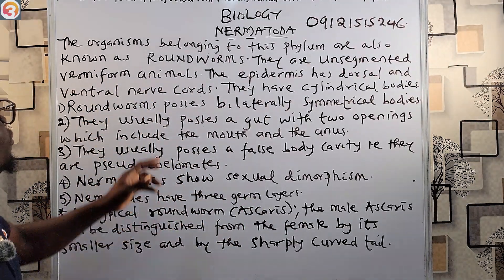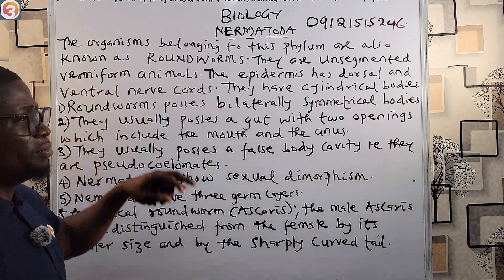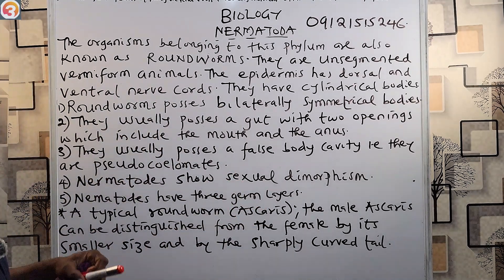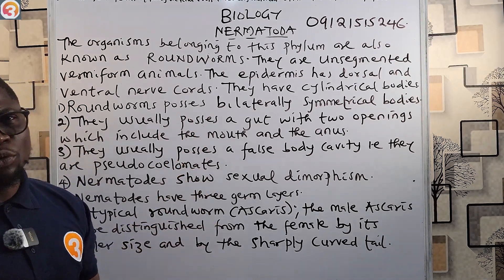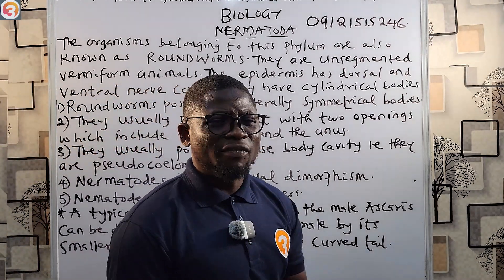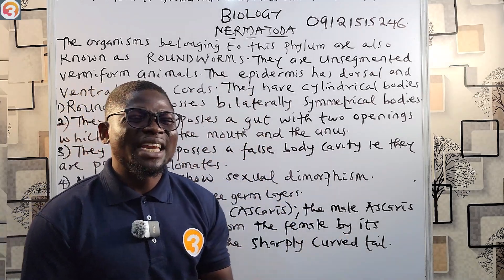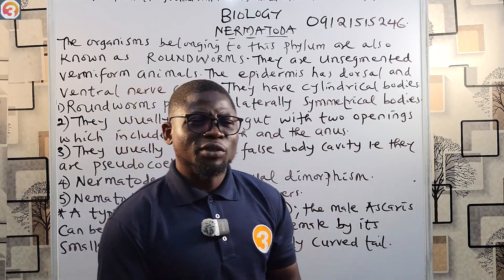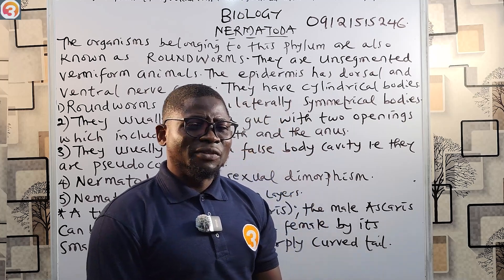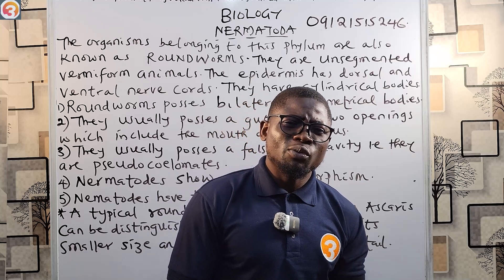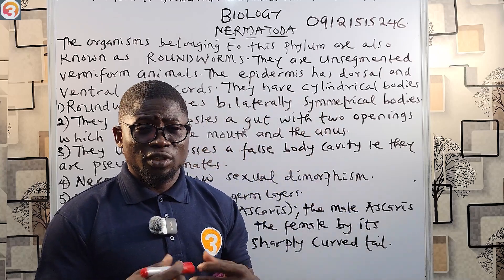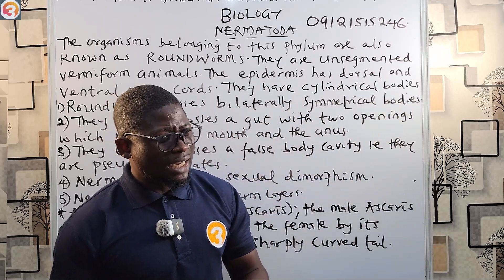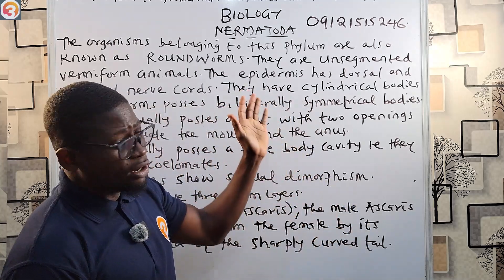Nematodes are unsegmented vermiform animals — 'vermiform' means worm-like. They feed on bacteria, fungi, and even other nematodes, and they play a very effective role in nutrient recycling. As they feed and excrete back into the soil, they contribute to up to 19 percent of the nitrogen content in soil, which is very important for plant growth.